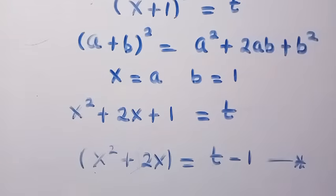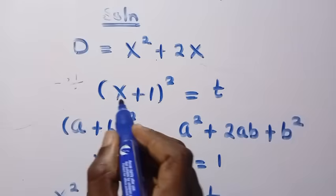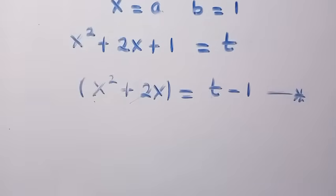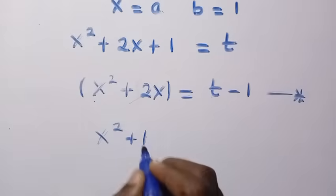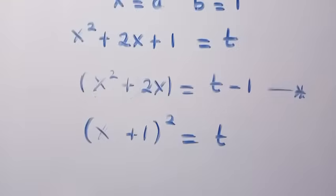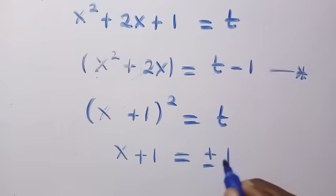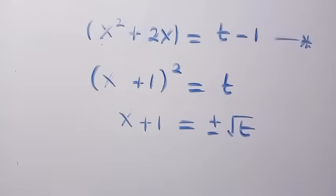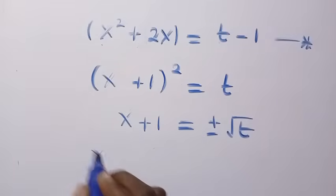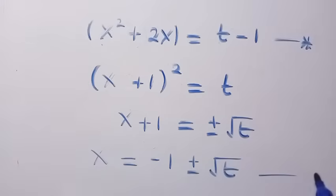Also, from x plus 1 squared equals t, we want to make x the subject. Taking the square root of both sides, we get x plus 1 equals plus or minus the square root of t. Transferring 1 to the other side gives x equals minus 1 plus or minus the square root of t.